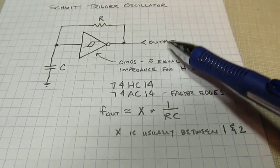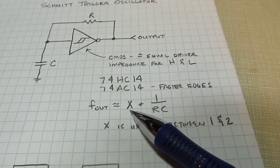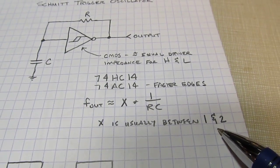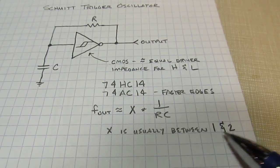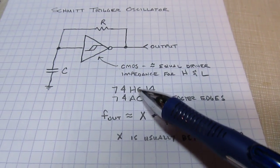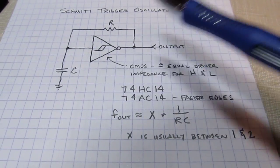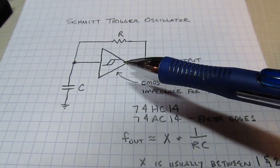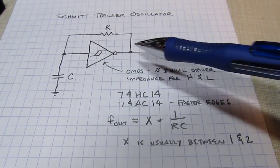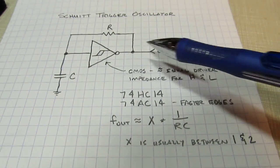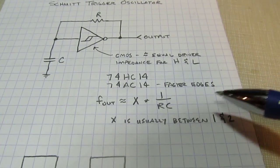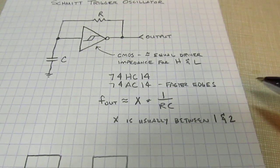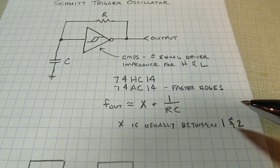The frequency of the output is kind of approximated by some factor X divided by the product of R and C. And X is usually between one and two. And the reason we have to kind of, we can't really narrow it down any better than this is that it's going to depend on a particular logic family you're using. It's going to depend maybe on the particular device, what those logic thresholds are for those high and low thresholds, and even what power supply voltage you're using. Because that's going to determine what voltages are going to be applied at the output to charge and discharge that capacitor. So it's pretty common for it to be anywhere between like 1.2, 1.8 or 1.9. So you'll have to play with it with some values to get the frequency set on yours. So let's take a look at what these look like in real life here.